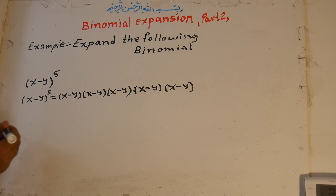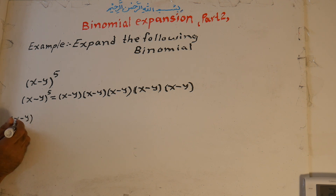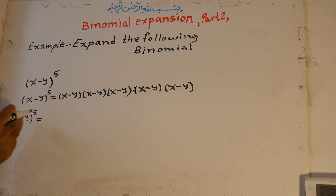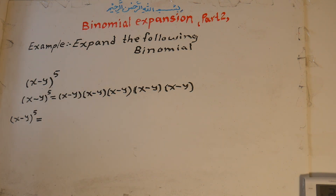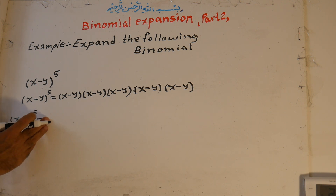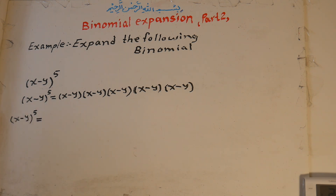But the easiest way is expanding — binomial expansion. For x minus y to the power of 5, if the sign between terms is positive, all signs in the expansion are positive. But because this sign is negative, the first term is positive, the second is negative, and so on — odd terms are positive and even terms are negative.